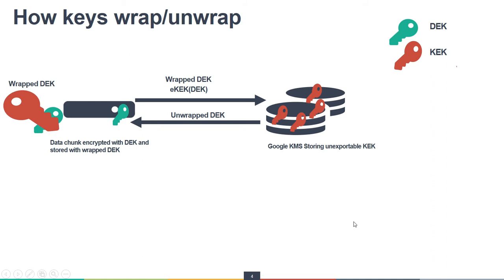Now let's look at how key wrapping works. On a Google service, data is encrypted with a green key which is the data encryption key, DEK. The red key is the key encryption key, KEK. Everything stored on that service instance is encrypted with the DEK, and this DEK is itself encrypted using the KEK. Whenever this service needs to access or write something, the DEK needs to be decrypted first. The service sends a request to Google KMS saying it needs the key in clear, and Google KMS decrypts the DEK.